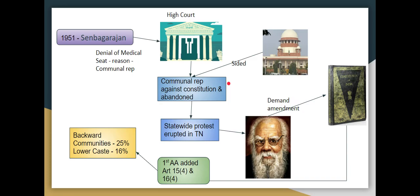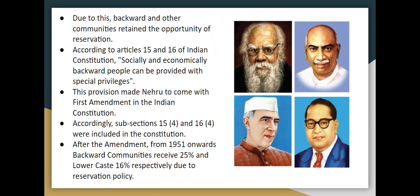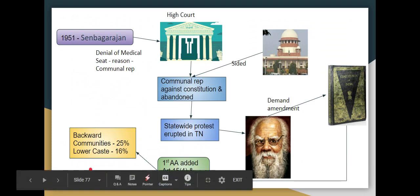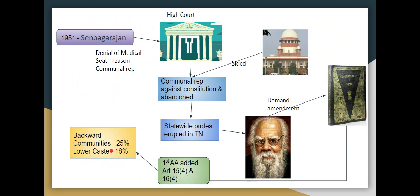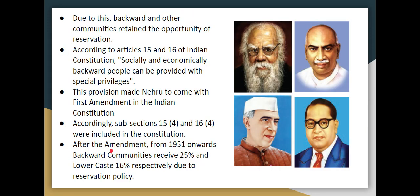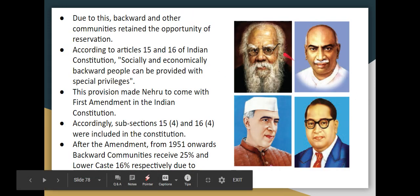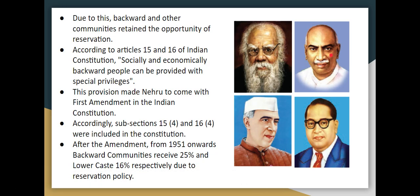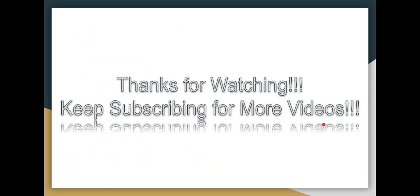Through these additions, backward communities could sustain reservation opportunities. Articles 15 and 16 added special privileges and exceptions for socially and economically backward people. Under the amendment, backward communities received 25% reservation and lower-caste groups received 16% reservation. Congress party president and Nehru as Prime Minister both supported this.